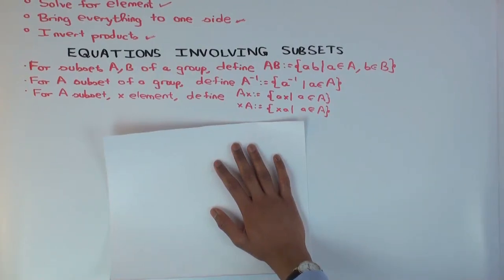So in this talk, I'm going to do something with manipulating equations in groups where the equations involve subsets. In a previous talk, which you should see before this, I've talked about manipulating equations involving elements. It's kind of the usual algebra, except there's a twist because you don't have commutativity. Now I'm going to talk about stuff involving subsets.